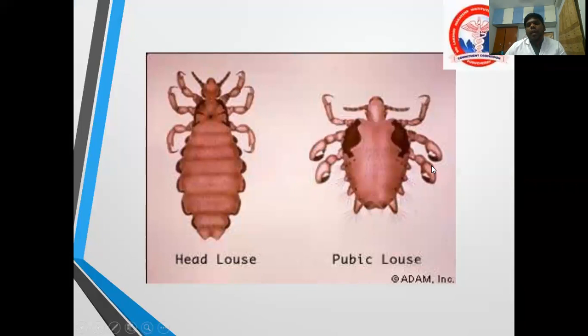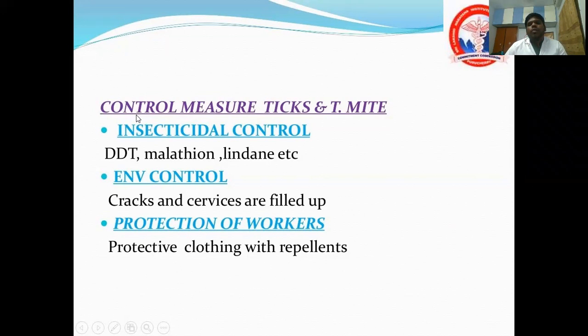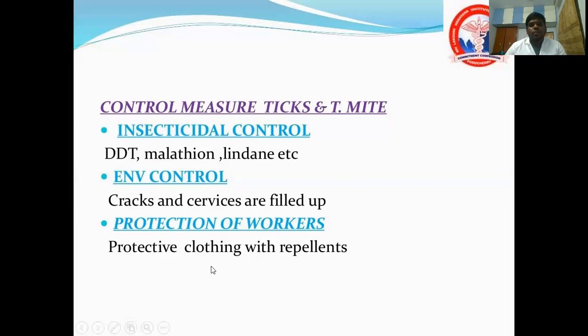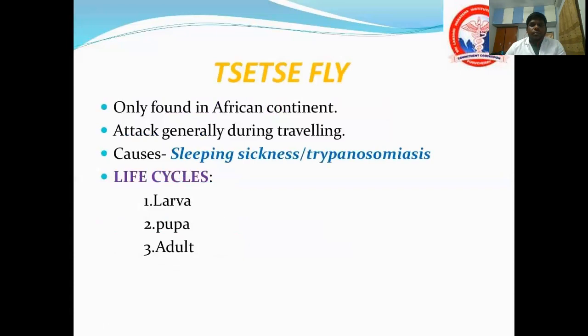Control measures for hard ticks and thrombiculid mites: insecticidal control using DDT, malathion, and lindane. Environmental control — remove and fill cracks and crevices in houses or sheds. Personal protective measures and insect repellents must be provided for workers.